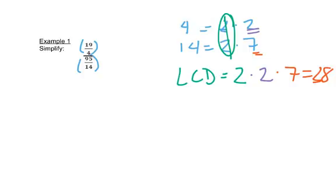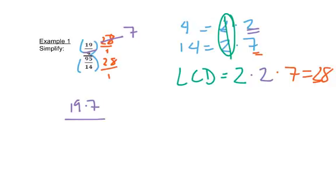We're going to take that 28 and multiply the top fraction by 28 over 1, and the bottom fraction by 28 over 1. We can take 4 into 28 and get 7, which gets rid of the denominator of that top fraction, so on top we now just have 19 times 7.